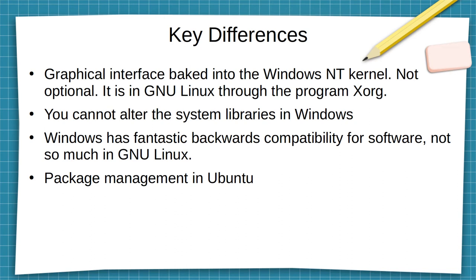Ubuntu is a Debian-based distribution. It uses the same package management tool and system to allow users to install compatible packages for the system they're using. It's common these days to see programs that target specific releases of Ubuntu, such as 20.04, and it's also common to see users providing their own repositories to provide more up-to-date versions of software.